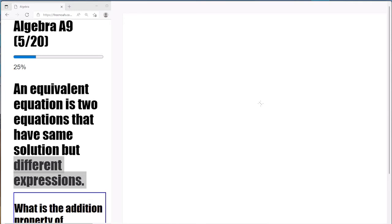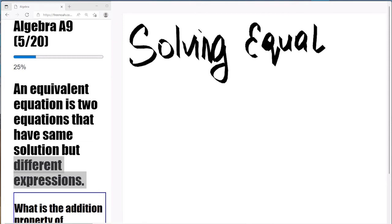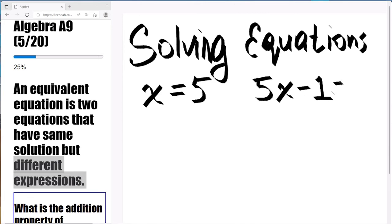Let's give you another example here. Solving equations. It's another form of saying two equivalent equations here. So we have x equals 5, and now we have 5x minus 1 equals 24.